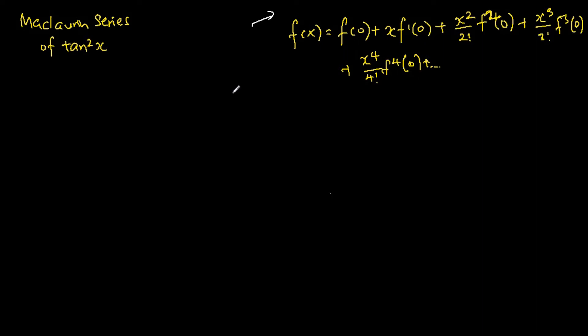The top right-hand corners formula shows us that the function can be expressed as an infinite series called the Maclaurin series. Today we are going to find the Maclaurin series of tangent squared x up to the x to the power of four terms.